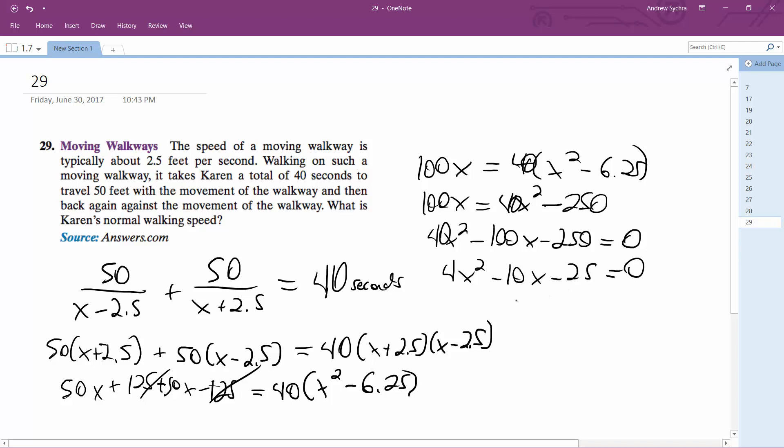So then this ends up just being using the quadratic formula. Opposite of b, 10 plus or minus square root minus 4 times 4 times negative 25, all over 2a which is 8. 10 plus or minus square root 100, so that's 400, 500 over 8. And what we end up with is 4.04 or 4.05 or negative 1.54, that doesn't work.